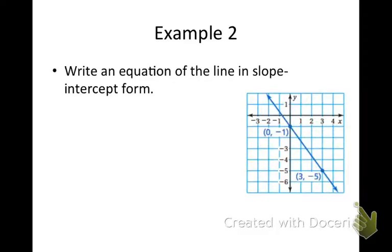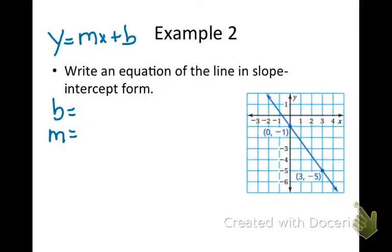Let's try it again. In this example, we want to make sure we're very clear on what slope-intercept form looks like. I need the y-intercept and I need the slope. The point where it crosses the y-axis is when x is equal to 0. So I see that the y-intercept is negative 1.